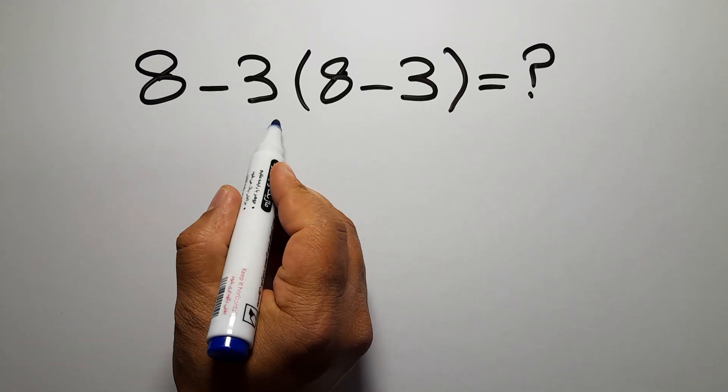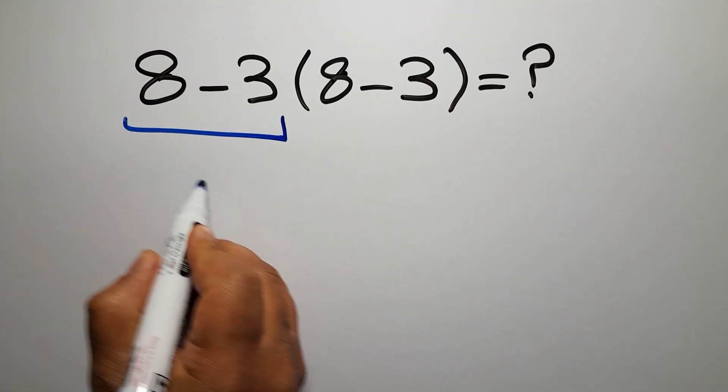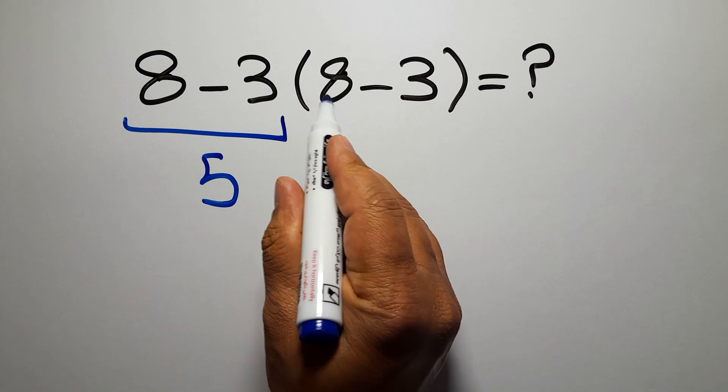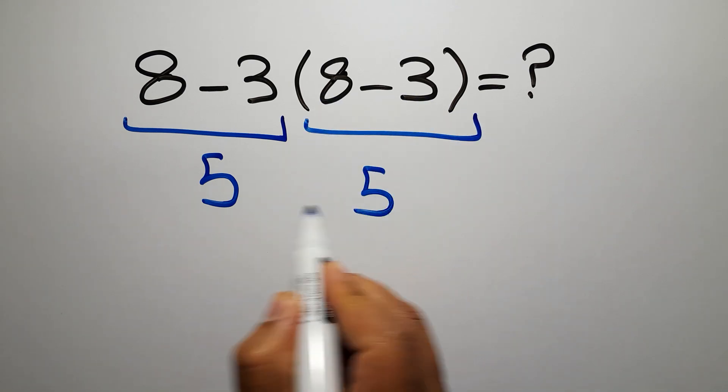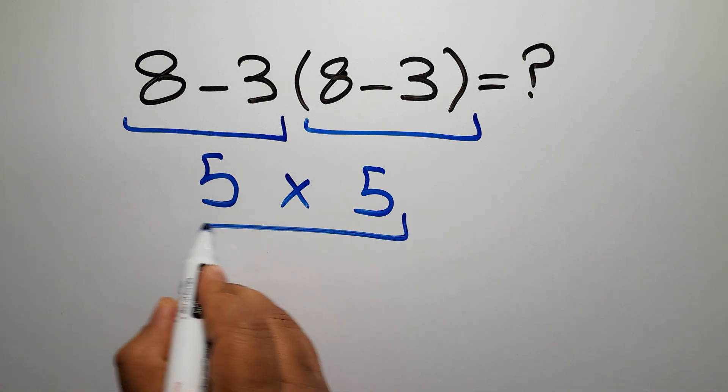Eight minus three gives us five, and again here we have eight minus three, so five times five equals twenty-five.